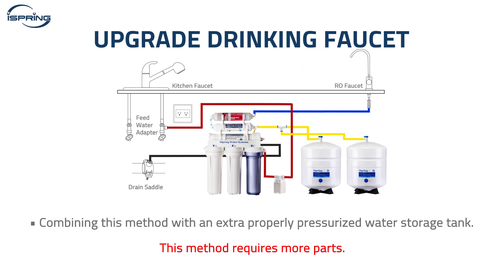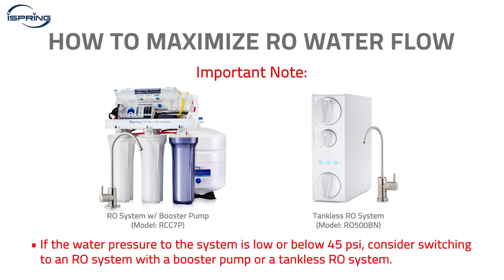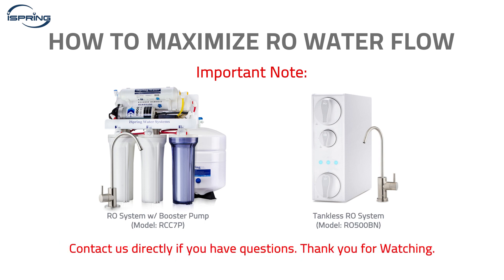Please note: this method requires more parts, including a drinking faucet, an extra tank, a 3/8-inch tank valve, fittings, and tubing. Additionally, if the incoming water pressure to the system is low or below 45 psi, consider switching to an RO system with a booster pump or a tankless RO system. If you are still not satisfied with the flow rate of your system or are still having trouble increasing the flow rate, contact us directly. Thank you for watching.